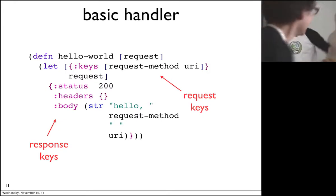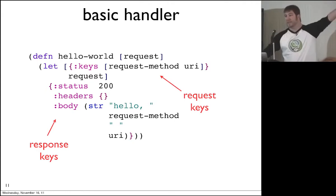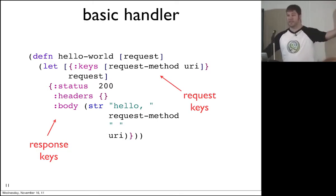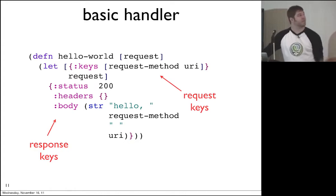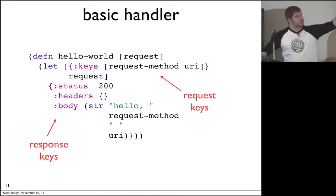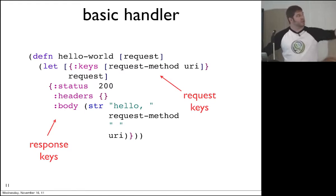We grab the things we care about. Clojure has a destructuring form called keys — it says I have a map of things, these are the keys I want you to grab out. And what I want you to return is a set of things: a status, some headers, and an actual response body. The response body comes back as a string and is sent along. This is a very simple request handler. It assumes no routes, nothing — it's very plain.